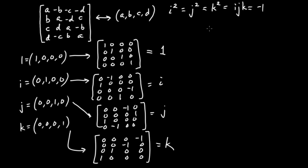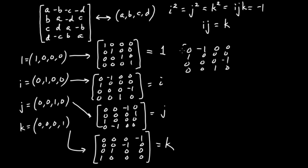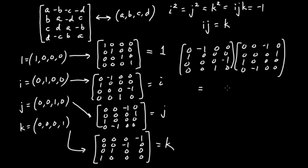I encourage you to check the other two cases and confirm that j² and also k² come out to be the same negative of the identity matrix. Let me do one last calculation to show that the relations between the i's, j's, and k's are preserved. We know from the previous video that ij = k, which in matrix form means that multiplying the i matrix by the j matrix should give the k matrix. So let's verify: I have the i matrix multiplied on the right by j.